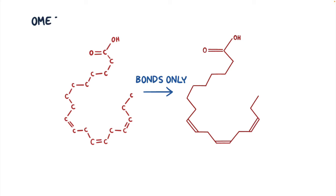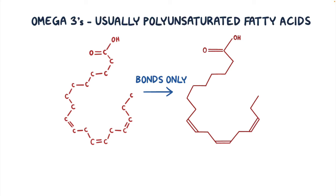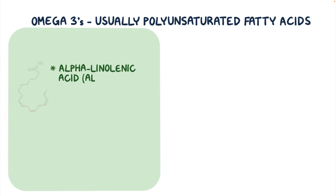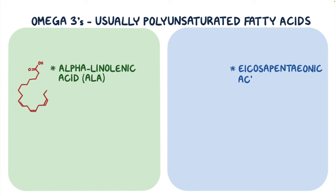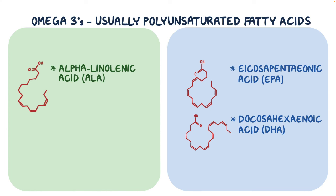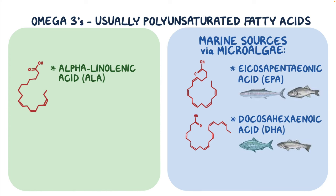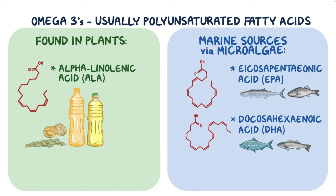Now, to make things even easier when looking at these molecules, I'm just going to show the bonds. Alright, so omega-3s are usually polyunsaturated fatty acids and include alpha-linolenic acid or ALA, eicosapentaenoic acid or EPA, and docosahexaenoic acid or DHA. EPA and DHA are marine sources of omega-3s. They're produced by microalgae and end up in the tissues of fish like anchovies, mackerel, salmon, and sardines. ALA is found in plants like flaxseed, walnuts, and canola and soybean oils. Our bodies can convert ALA into EPA and DHA, but it's an inefficient process that yields only small quantities, and that's why dietary recommendations include foods that have EPA and DHA.